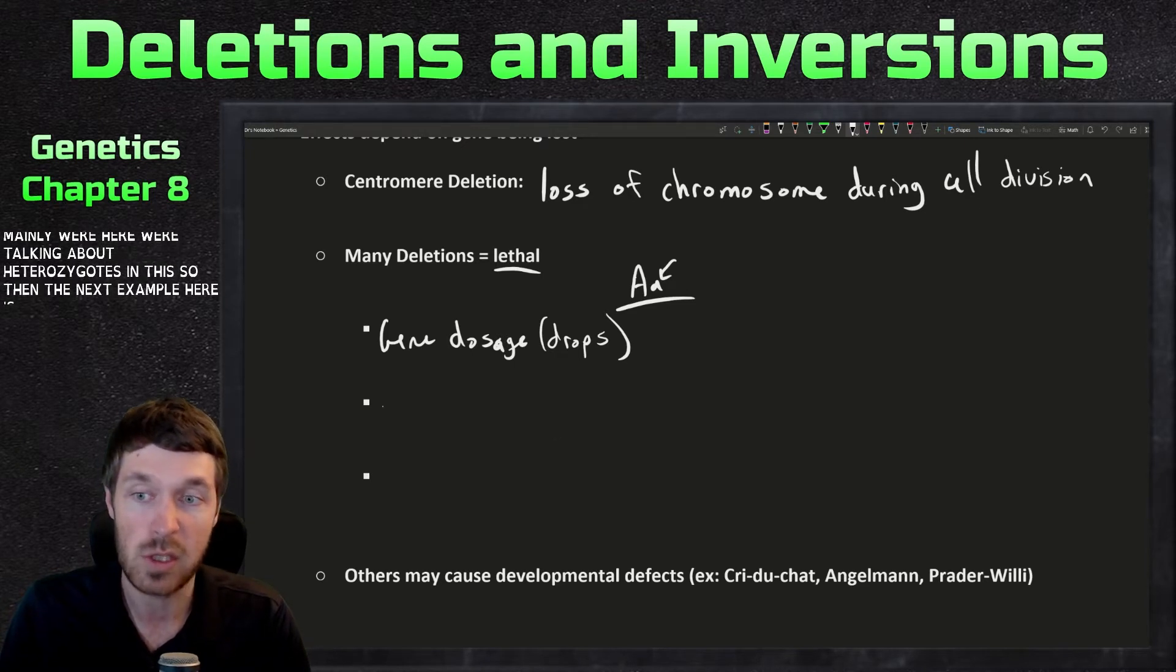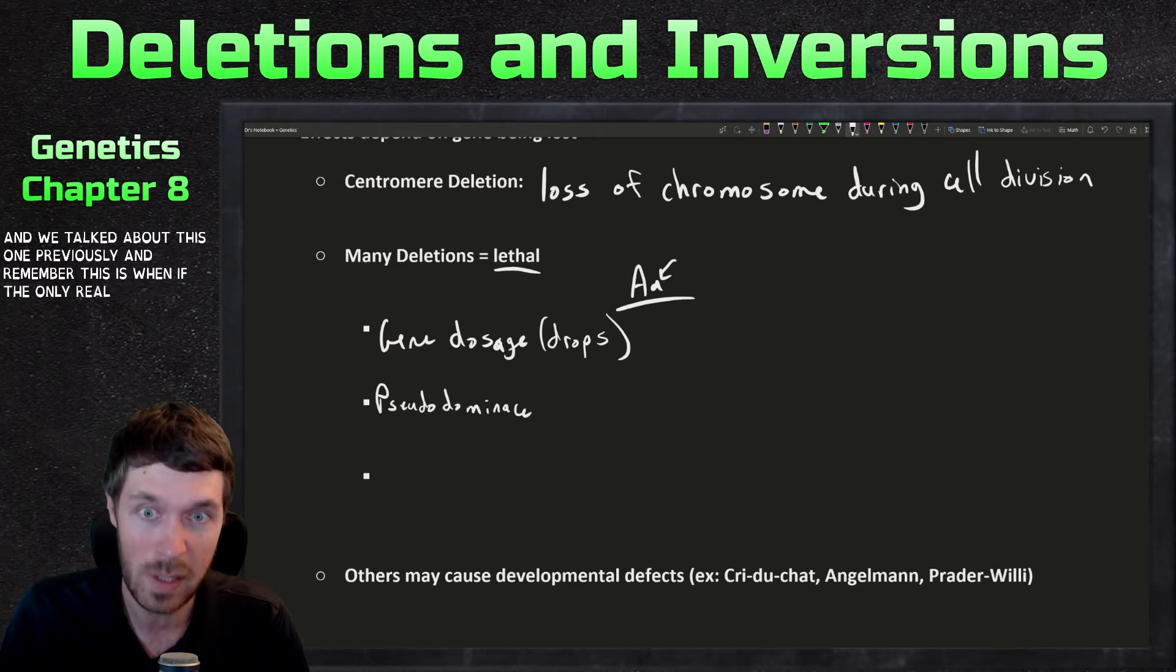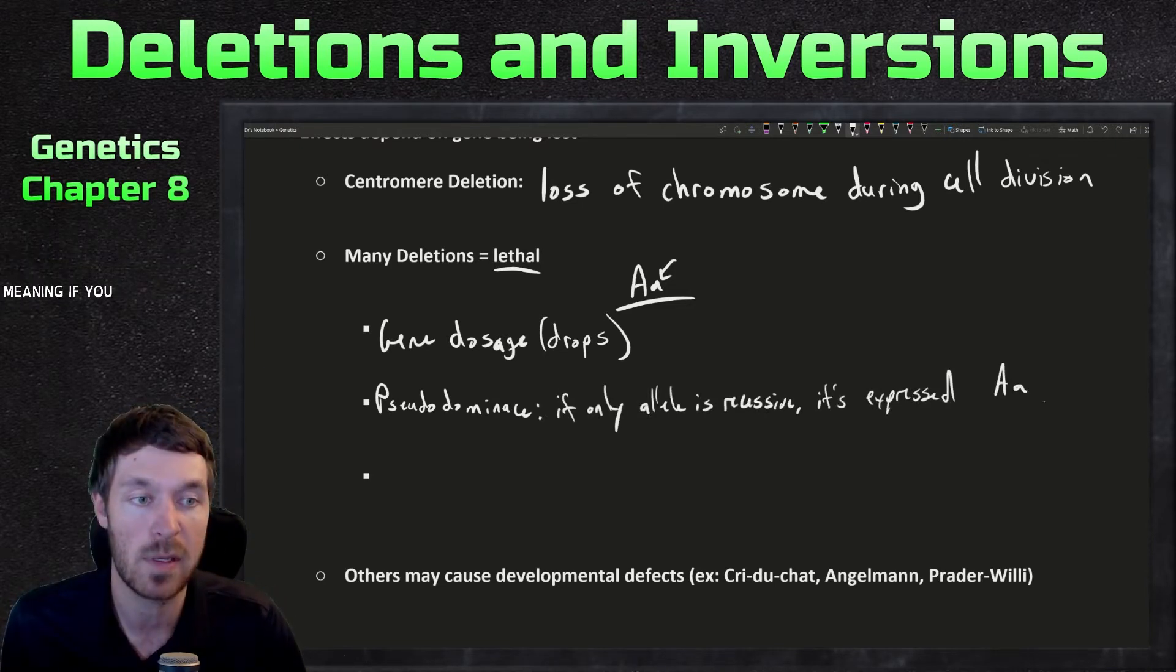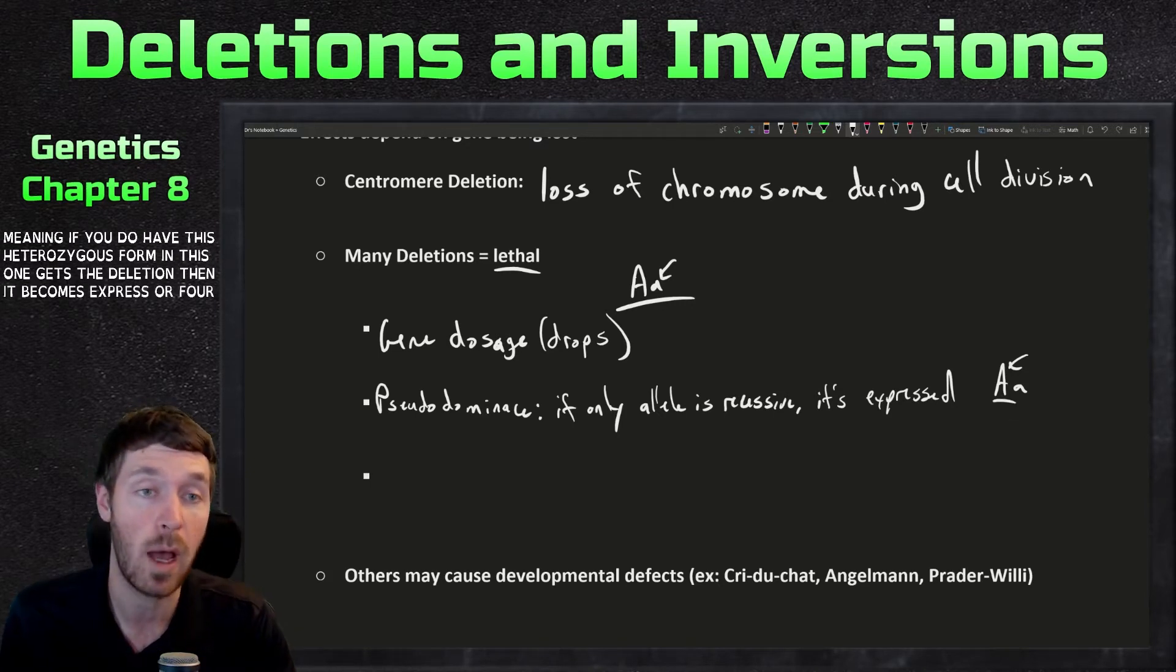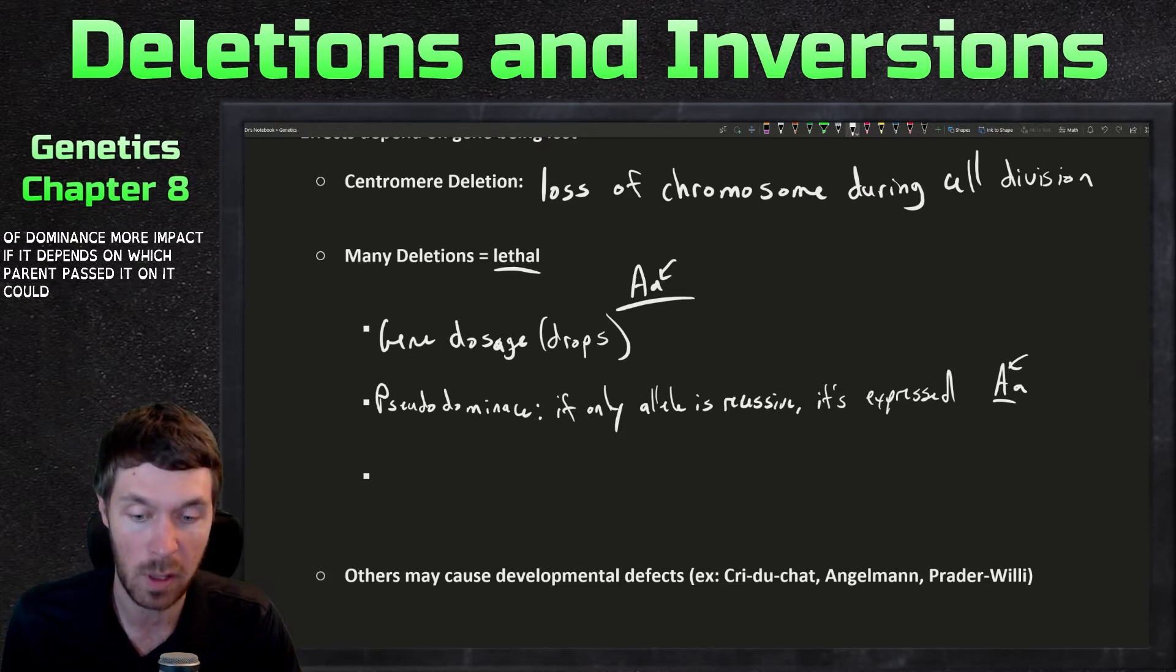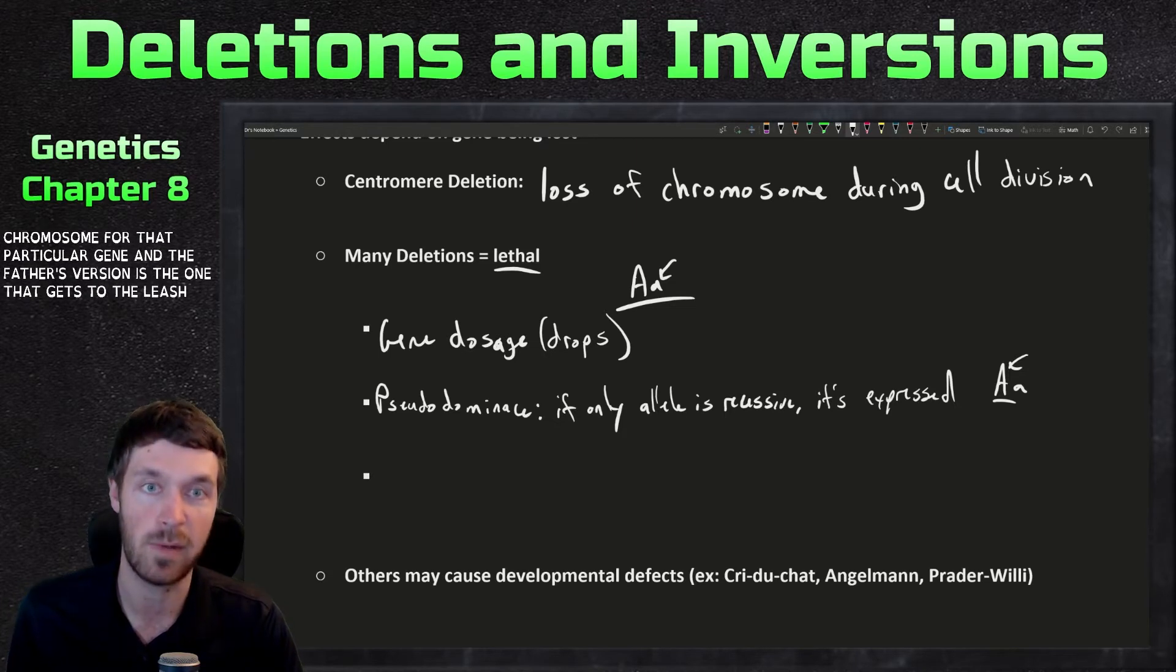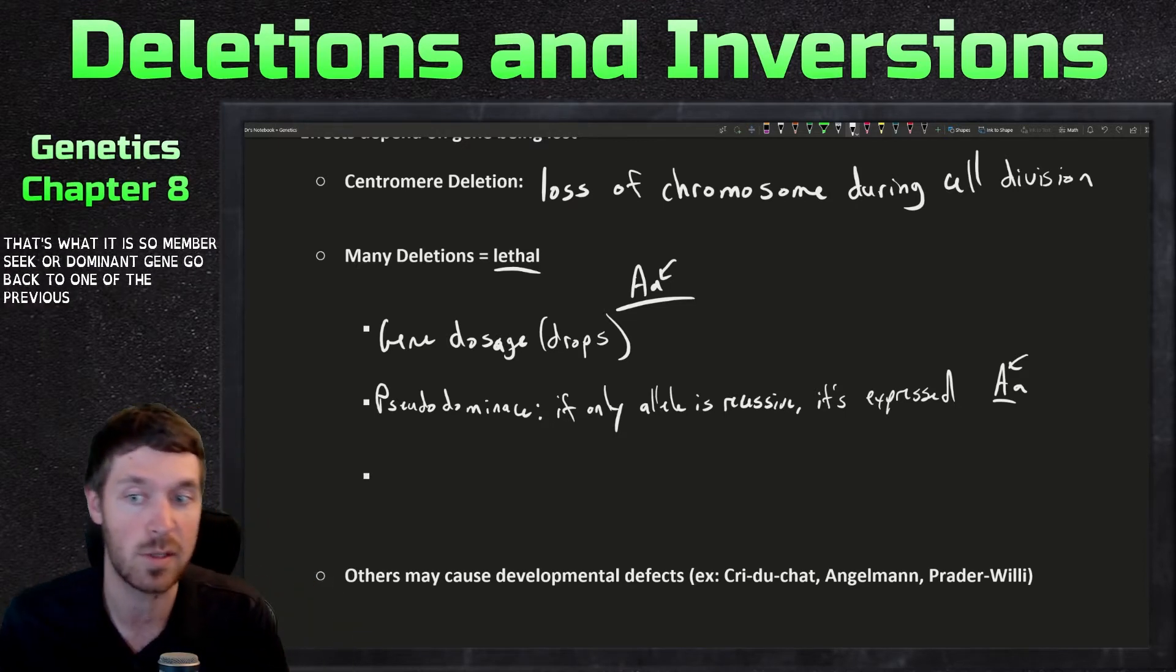So mainly we're talking about heterozygotes in this. So then the next example here is pseudodominance. And we talked about this one previously. And remember, this is when if the only allele present is dominant, it has the deletion in it, then that makes it recessive. So if only allele is recessive, then it's expressed. Meaning if you do have this heterozygous form and this one gets deletion, then it becomes expressed or for pseudodominance more in fact, it depends on which parent passed it on. So we talked about the goats where it depends on the sex of the individual. So if it's sex dependent for that particular chromosome for that particular gene, and the father's version is the one that gets deletion, and the father's one is the one that's expressed, then that's what it is. So remember, pseudodominance. You can go back to one of the previous lectures to check that one out.